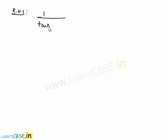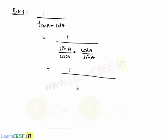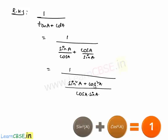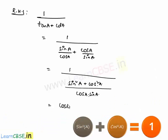The RHS is 1 / (tan a + cot a). Writing tan a = sin a / cos a and cot a = cos a / sin a, and taking LCM as cos a × sin a, the numerator becomes sin²a + cos²a = 1. Sending the denominator to the top gives cos a × sin a.